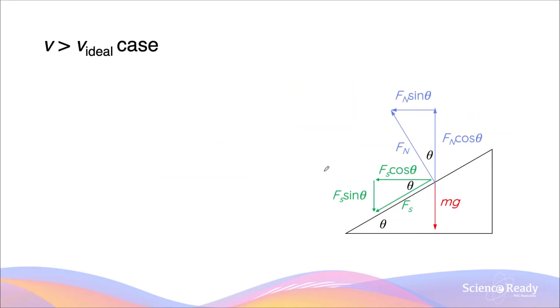Let's start by analysing the situation when the velocity of the vehicle is greater than the ideal velocity without needing any friction. So in this case, my static friction is acting down the slope. If we resolve the vectors into a vertical component and a horizontal component, the vertical component becomes the static friction times sin θ, where θ is the angle at which the surface is banked. These two angles here are equal because they are alternate angles on parallel lines.